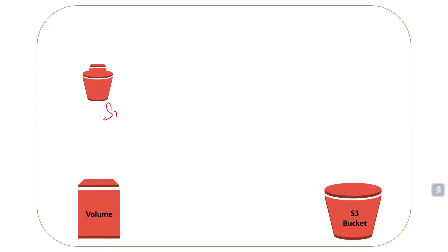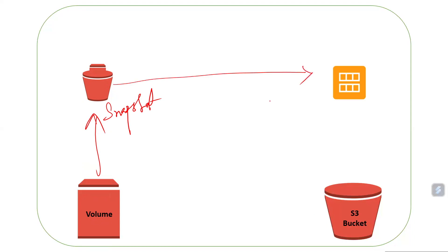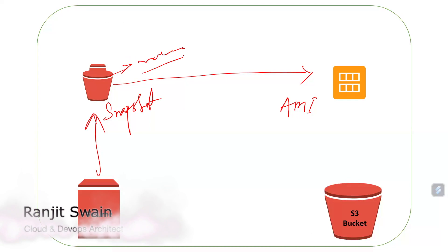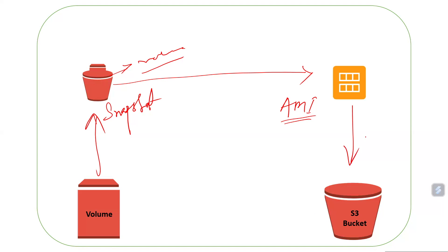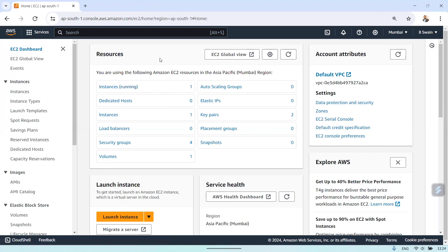First we are going to create a snapshot from the volume. From that snapshot we are going to create an image — this will be our AMI. The snapshot will contain all the volume information, and we are going to convert that to an AMI. Once we convert it, we'll store that image into the S3 bucket.